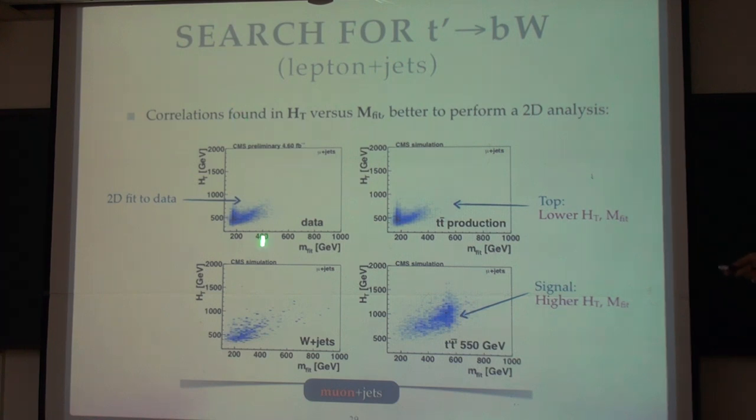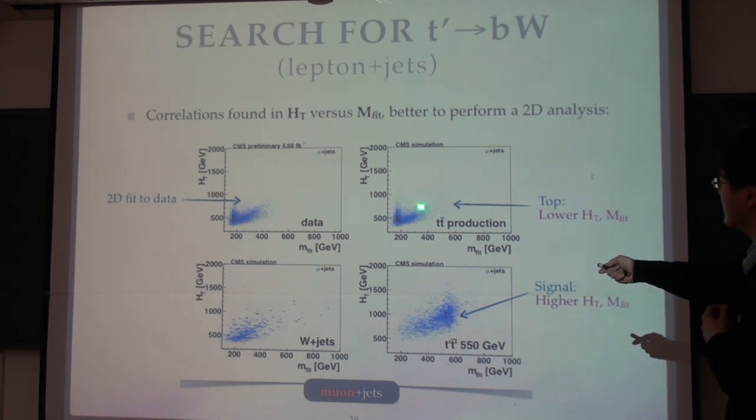The horizontal axis is mass, and the vertical one is what we call HT, or the sum of all the transferred energy. In this case, one can distinguish signal from background. For example, the dominant background is definitely top, which looks like a Nike shape or wiggle here. The signal should go to the right-hand side top, heavier in any case. Unfortunately, our data just look like top.